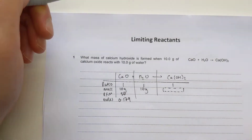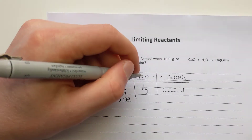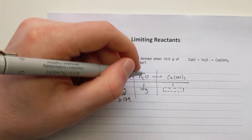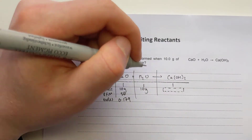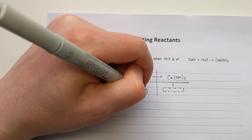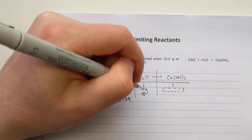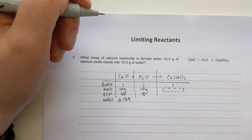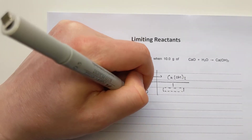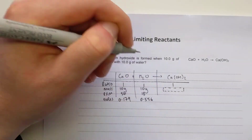Same thing with water: 10 grams of it. Its RFM is 1 plus 1 plus 16 for H₂O, which gives an RFM of 18. Moles is mass divided by RFM: 10 over 18, which gives you 0.556 moles.